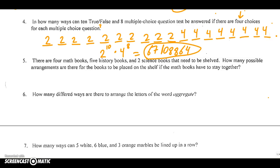Number five. There are four math books, five history books, and two science books that need to be shelved. How many possible arrangements, underline the word arrangement, that means order matters. So this is a permutation question. Are there for the books to be placed on the shelf if the math books have to stay together? This is important. The math books want to stay together. They're one thing. The seniors want to stay together. It's all the same type of question.